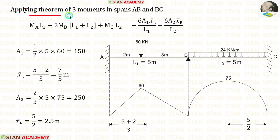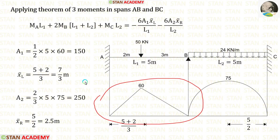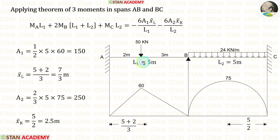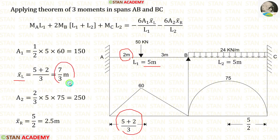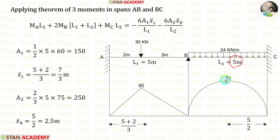Now let us apply the theorem of three moments in spans AB and BC. Area 1 we have already calculated. Now let us calculate x-bar left. For this triangle the formula for the centroid distance towards the left is (L + A)/3. Here L is 5 and A is 2, giving x-bar left equal to 7/3 meters. Now let us calculate area 2. For this second degree parabola the area formula is (2/3) × breadth × height. Here the breadth is 5 and height is 75, giving us 250.